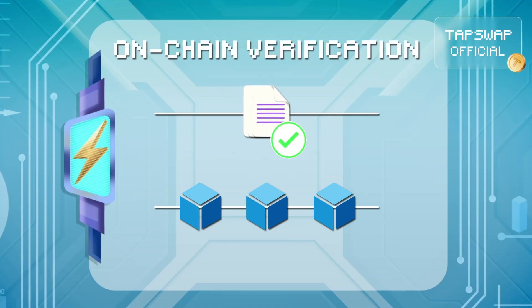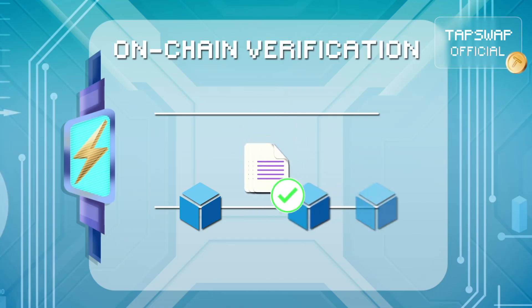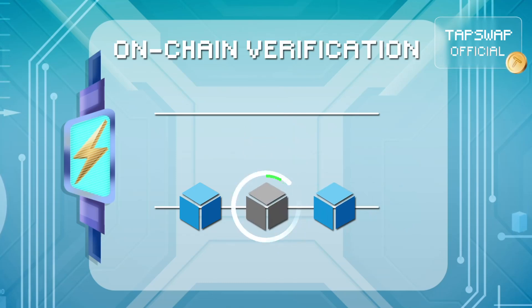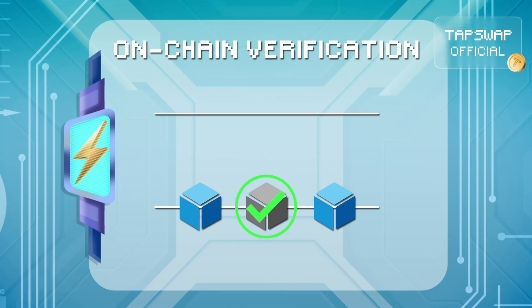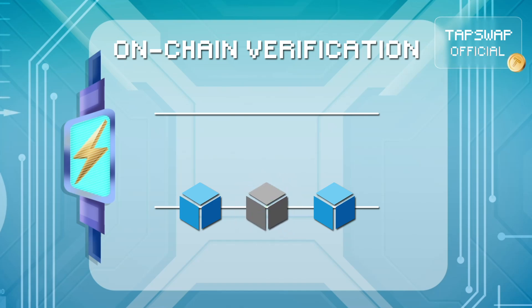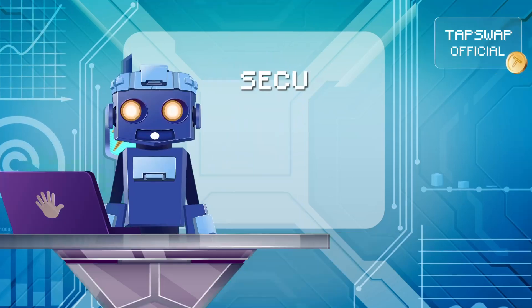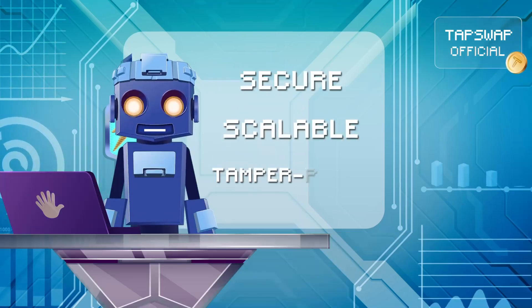The validity proof is sent to the layer 1 blockchain. The on-chain verifier contract checks the proof. If the proof is valid, the blockchain updates its state to reflect the transactions. This process ensures that the system is secure, scalable, and tamper-proof.